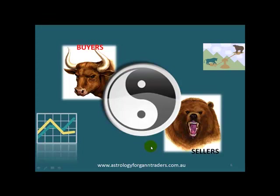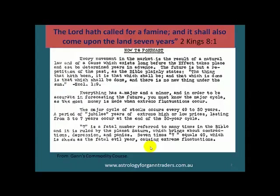And the planets can, depending on their alignments, make us feel on a collective level fearful or exuberant, and that's how we can forecast. Now, this is a page out of GAN's commodity course on how to forecast, where he actually does mention a planet. Seven is a fatal number referred to many times in the Bible.